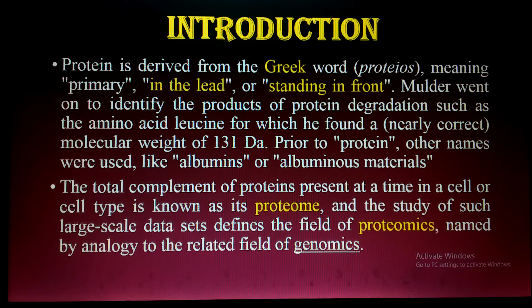Prior to the term protein, other names were used, like albumin. Albumin is the most familiar protein — it is the egg white protein we take in our daily breakfast. The total complement or total amount of protein in a cell or cell type is known as the proteome.